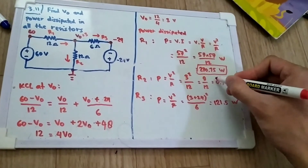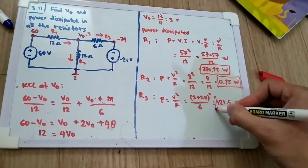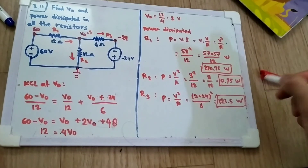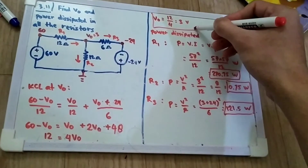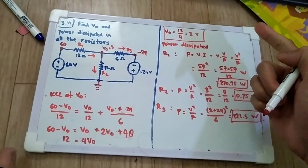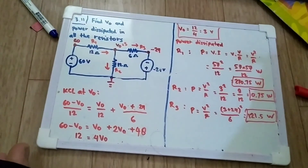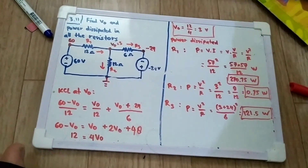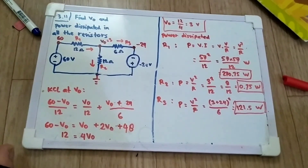So the power dissipated in R1, R2, and R3 has been calculated, and V0 equals 3V. We have found all the answers required by the problem. Thank you for watching — let me know if I made any mistakes.